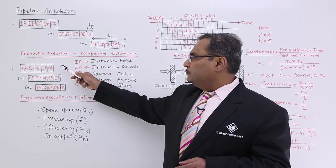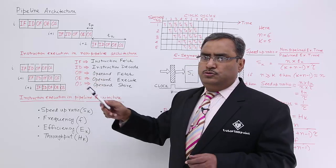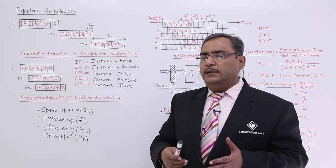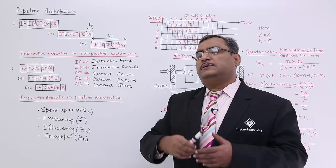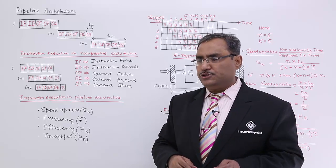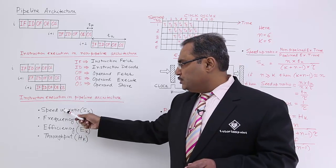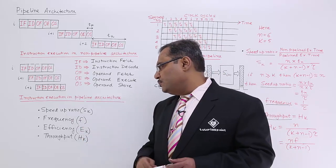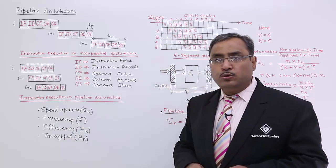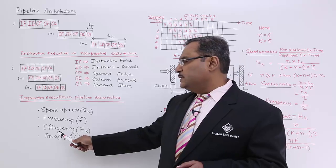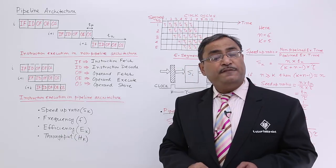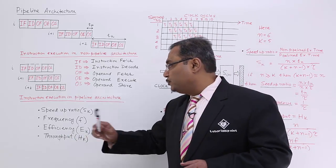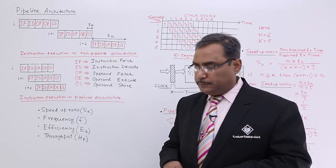We shall discuss some parameters which will decide the performance of your pipeline execution. We shall discuss these 4 parameters: one is the speed-up ratio, next is the frequency and how to calculate it, next is the pipeline efficiency, and the last one is the pipeline throughput.